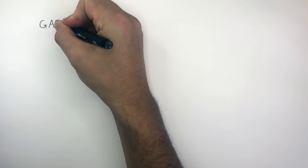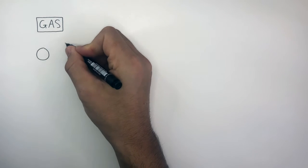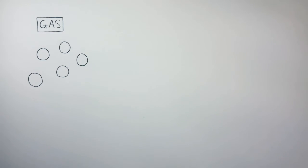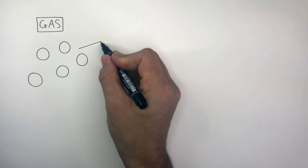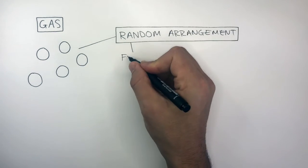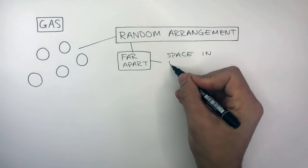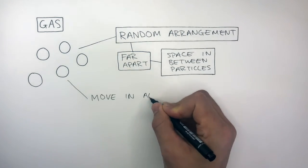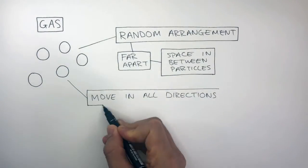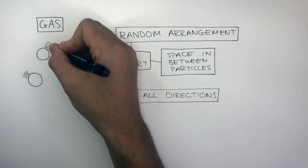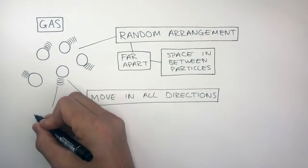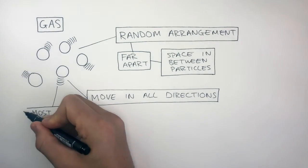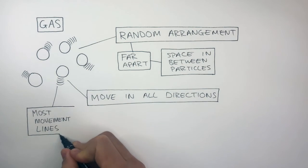In gas particle diagrams, the particles are drawn in random places with space in between them. This is because the particles in a gas have a random arrangement, they're far apart, and there's space in between the particles. The particles move in all directions and they move very quickly, as shown by the movement lines. Gases have the most movement lines compared to solids, liquids, and gases, as the particles in gases move the quickest.